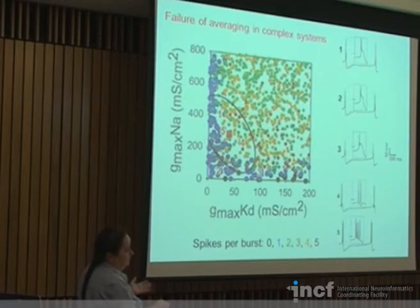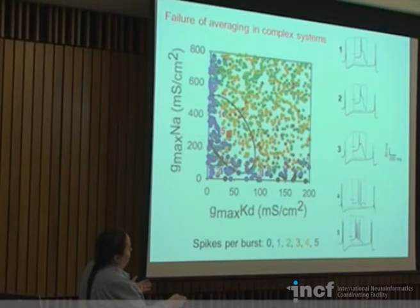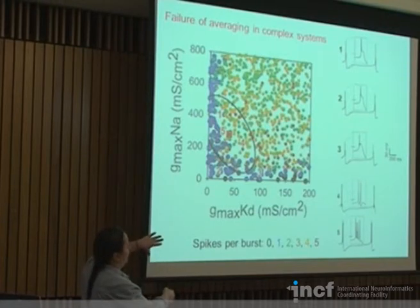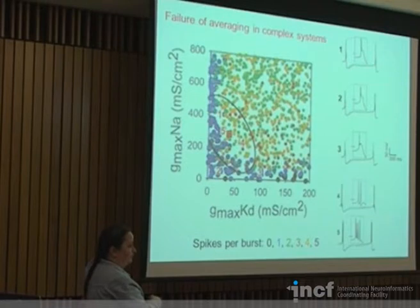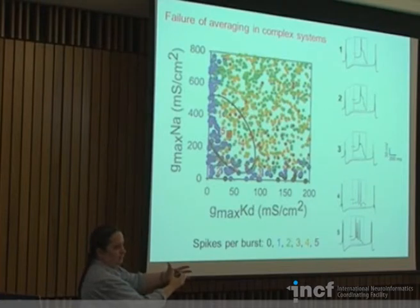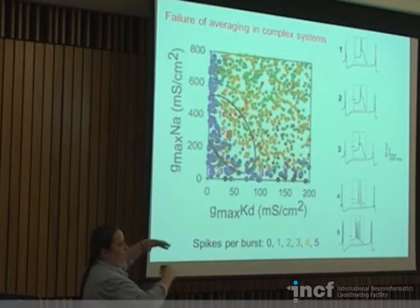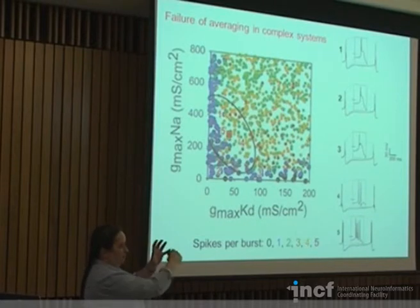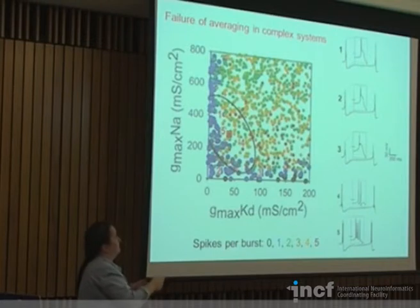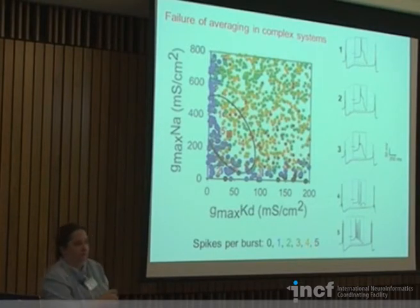This distribution of 'spike-plus-shoulder' neurons is concave and hugs the axis, so the average actually falls outside the distribution itself. Distributions of parameter combinations that produce similar activity can often have a non-trivial, non-convex shape in parameter space — not a nice blob where the average is in the middle, but some complicated shape where averaging will not get you anywhere.